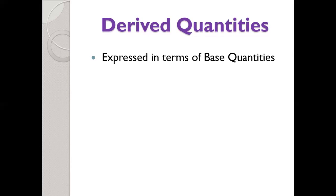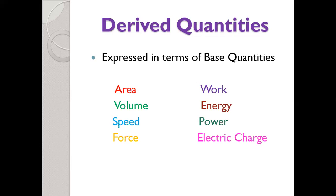Derived quantities are expressed in terms of base quantities. For example: area, volume, speed, force, work, energy, power, and electric charge are all derived quantities. There are many different derived quantities — base quantities are only seven, while derived quantities exist in very large numbers. Only eight examples are discussed here. Derived quantities are defined by combining base quantities.